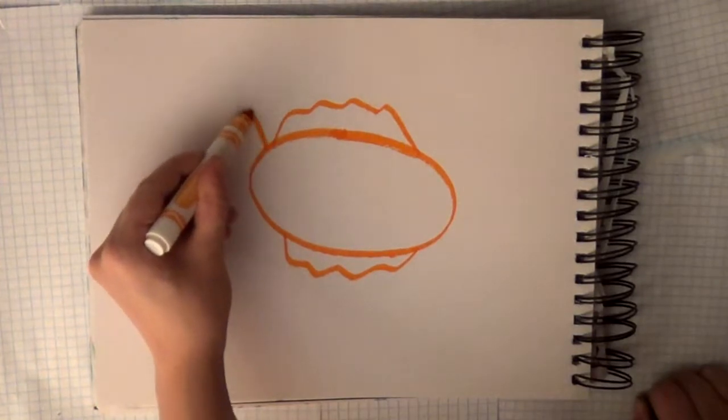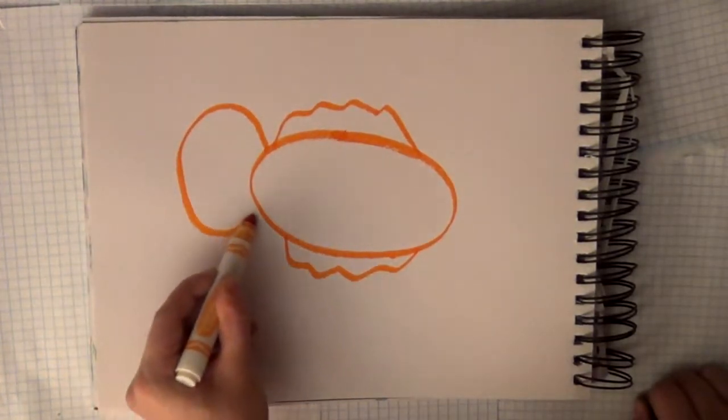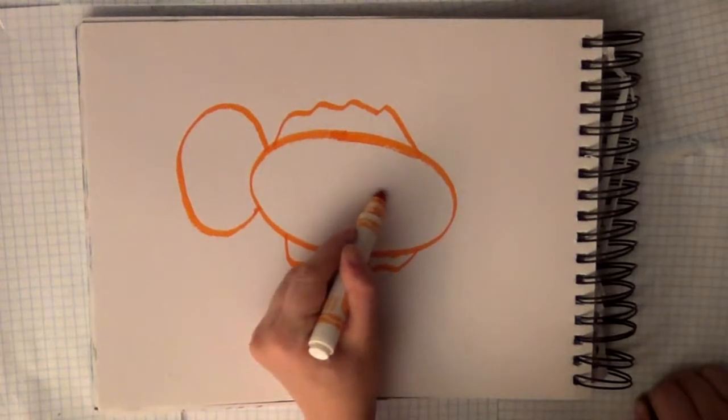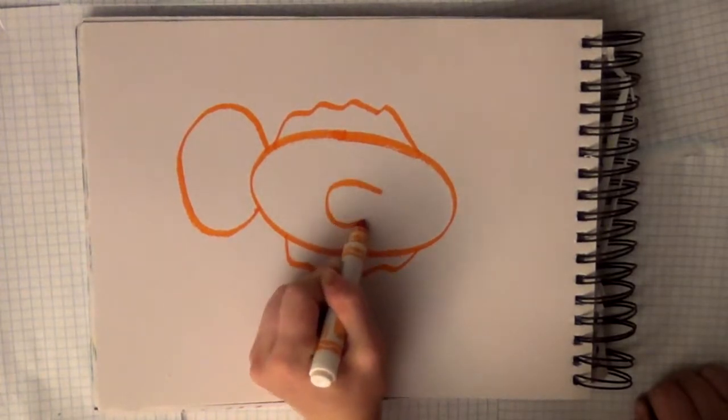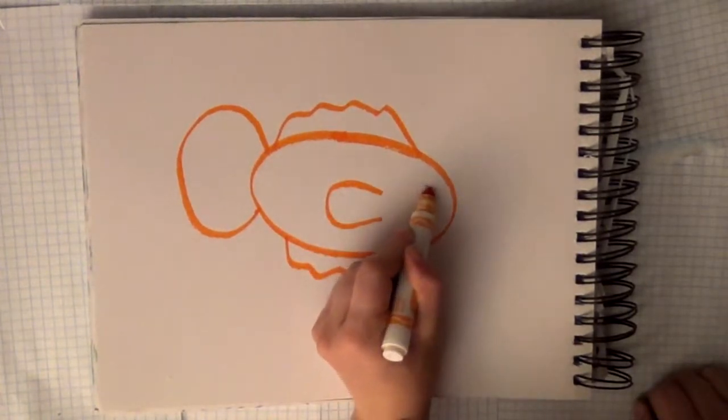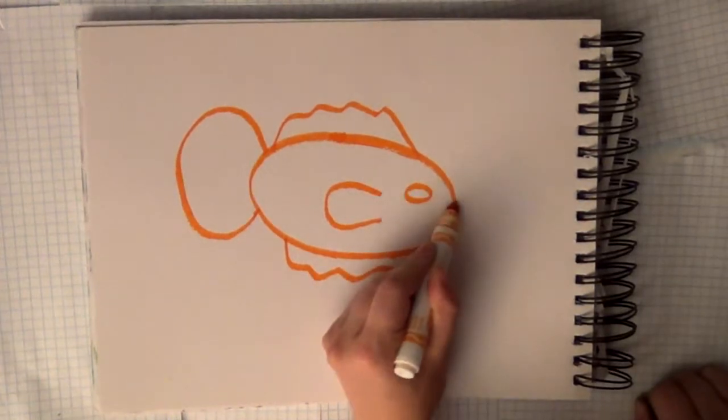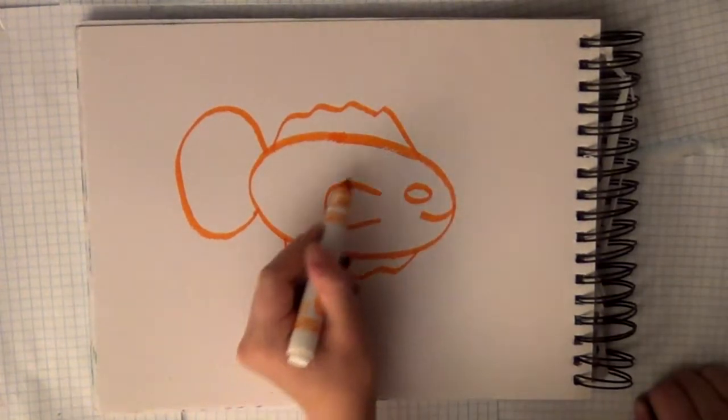Now you're going to give him a tail. Now he needs a fin on the side of his body. Let's give our clownfish a little smiley face, and he needs his stripes.